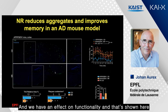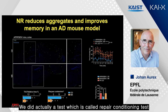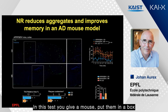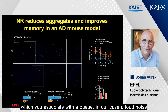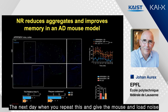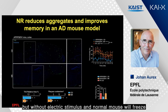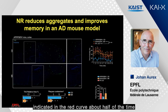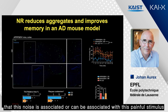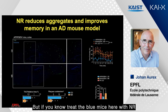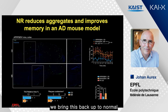We also show an effect on functionality using the fear conditioning test. You place a mouse in a box, give it a painful electric stimulus associated with a cue — in our case, a loud noise. The next day, when you repeat the loud noise without the shock, a normal mouse will freeze about half the time (red curve). An Alzheimer mouse won't freeze because it doesn't recall the association. But if we treat the blue mice with NR, we bring their freezing response back up to normal.